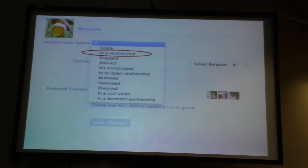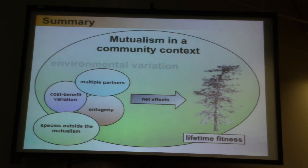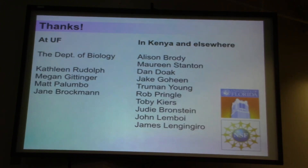So we have to update the mutualist Facebook page. Accounting for this complexity is really important, because our entire understanding of the stability and evolution of mutualism is predicated on how all this variability in nature integrates to impact lifetime fitness. My argument is that we really need to start thinking at broader temporal — and perhaps spatial — scopes to get at how these interactions evolve and persist. Thank you so much for your attention, thank you to Rowan for the invite, and I'm happy to answer any questions.